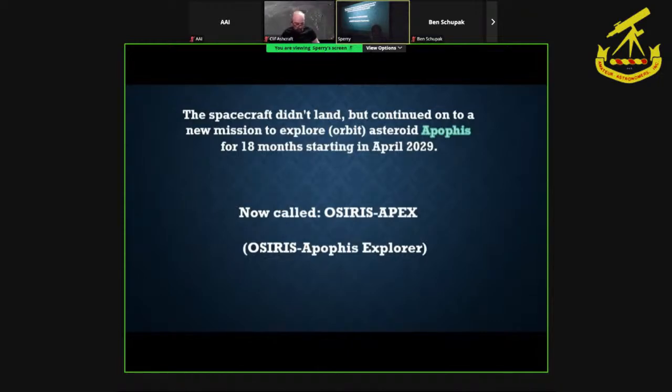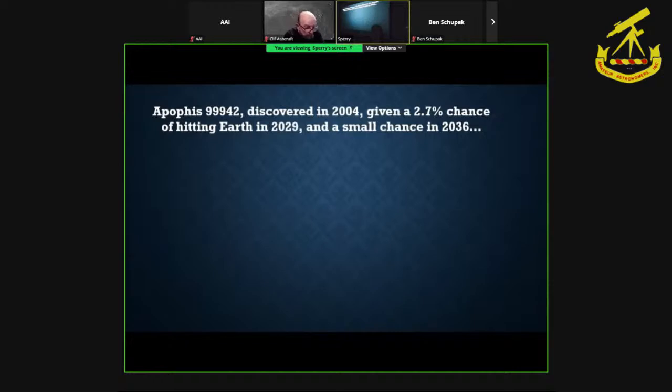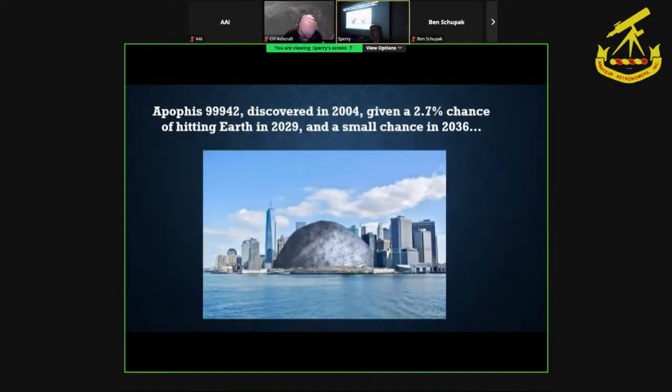Apophis, by the way, is the god of darkness and chaos. It was one of those asteroids that was going to come perilously close to Earth. It was given almost a 3% chance of hitting Earth in 2029 and a small chance in 2036. They have studied it and decided it's not going to be dangerous. But it's certainly well named for being an agent of chaos.